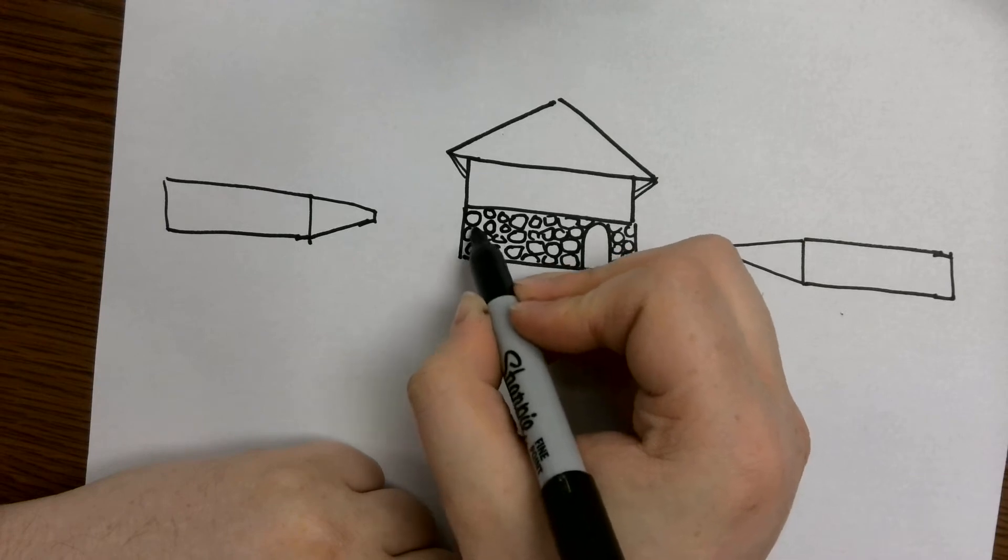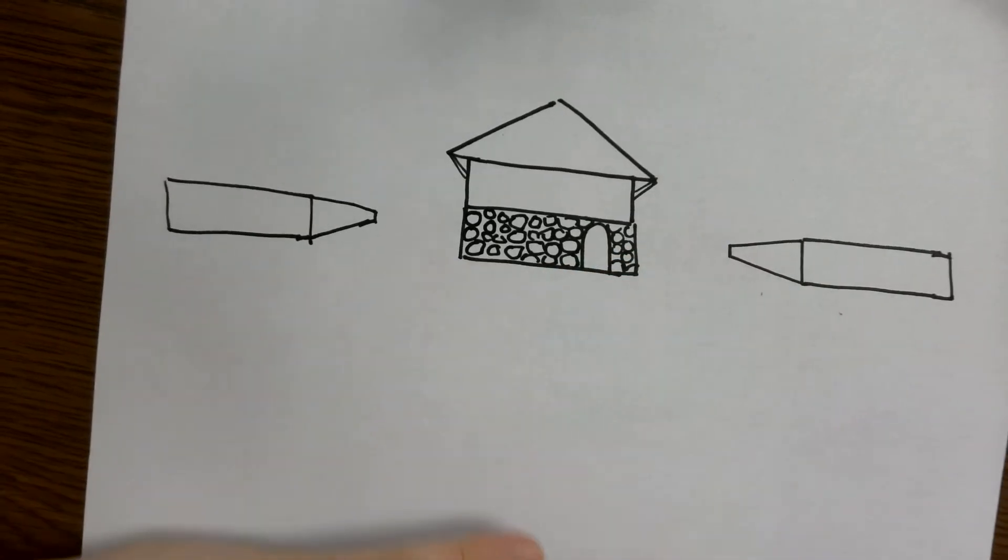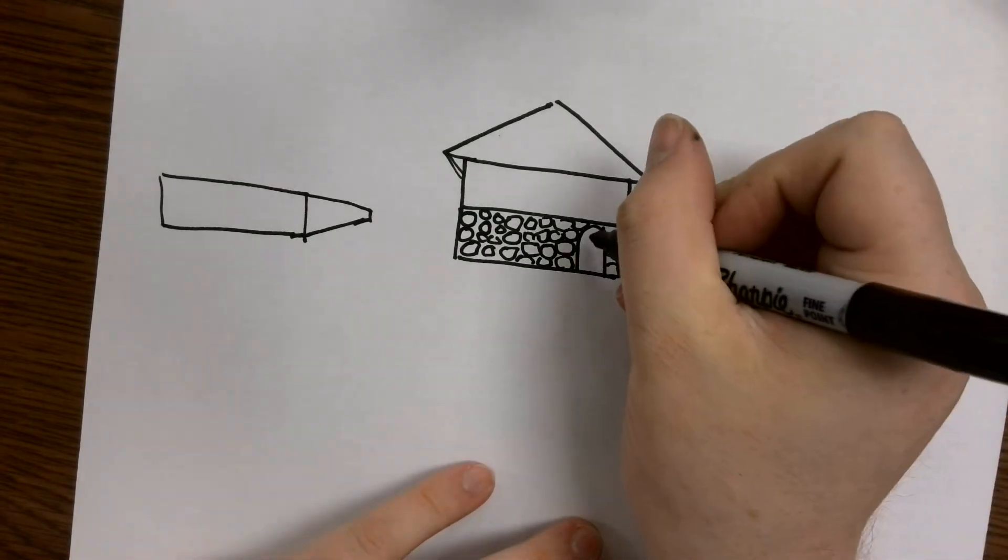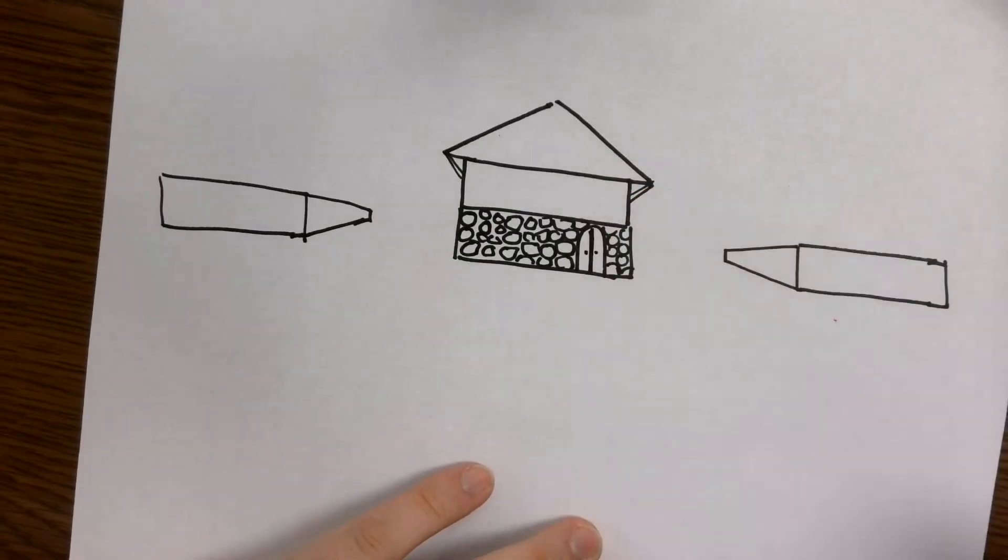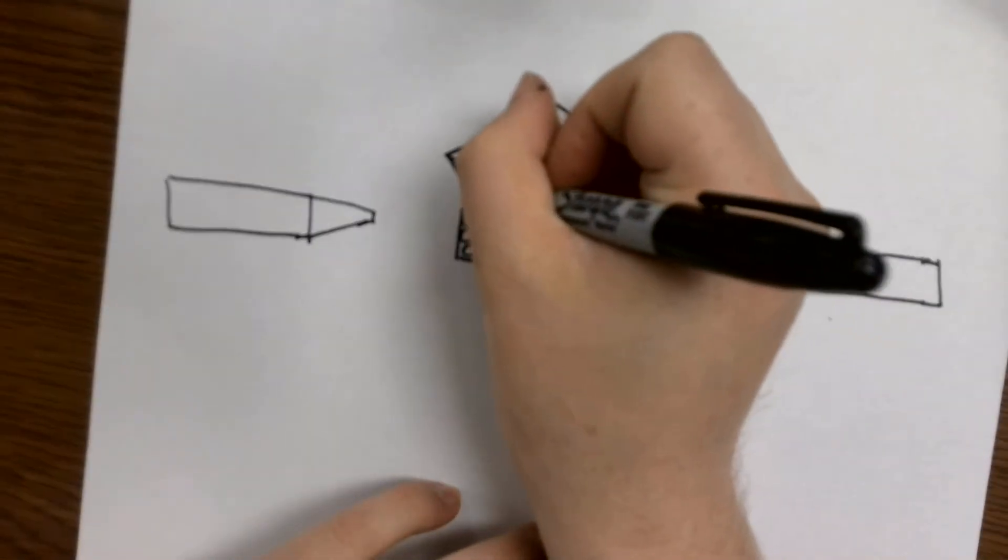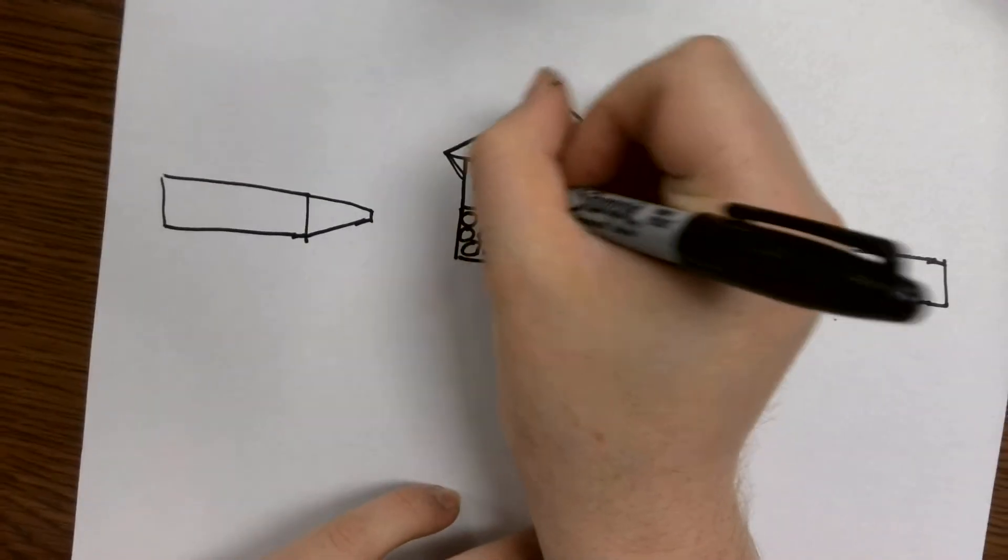Otherwise people are going to think, eh, you kind of cheated and made your rocks into circles. Oh well. So we got the door. Here we go. We can add a little fancy door here.